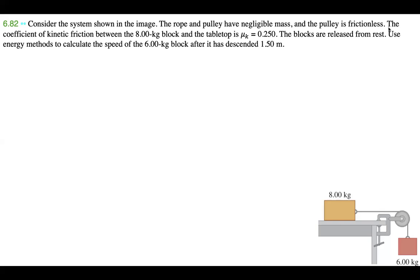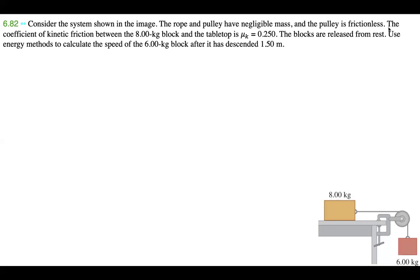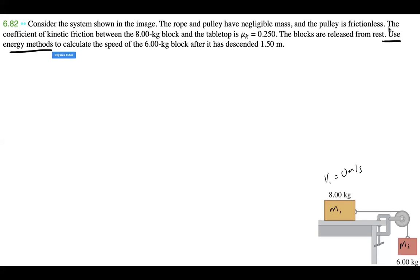The coefficient of kinetic friction between the 8.00 kilogram block and the tabletop is μk = 0.250. The blocks are released from rest. Use energy methods to calculate the speed of the 6.00 kilogram block after it has descended 1.50 meters. So we have mass one, the 8.00 kilogram block on the table, and mass two, the 6.00 kilogram block hanging. We want to find v2 after descending 1.5 meters.